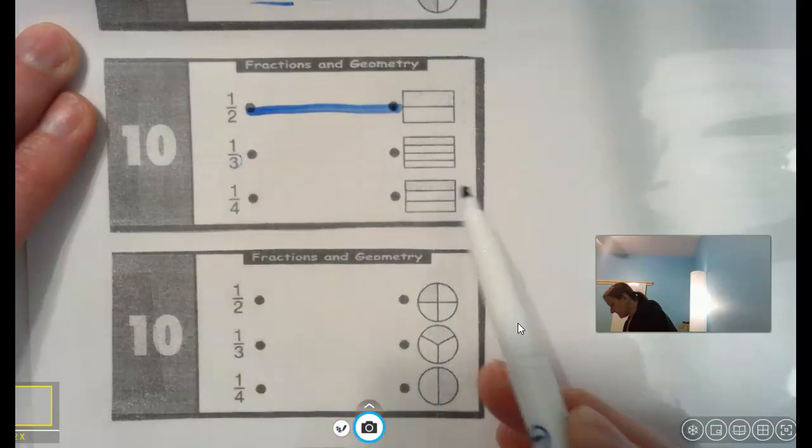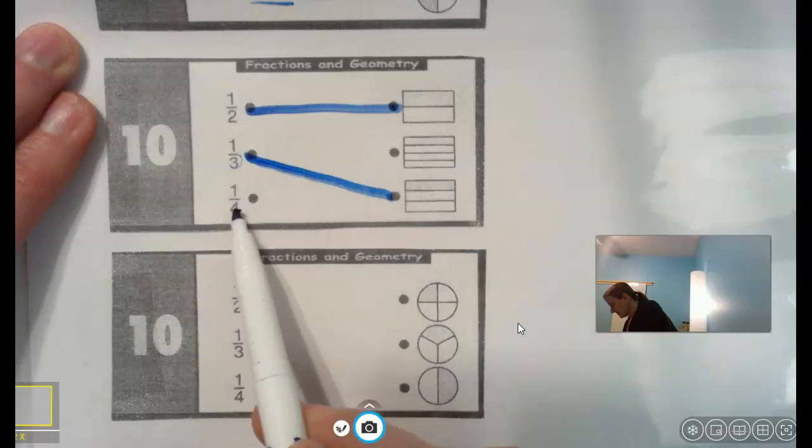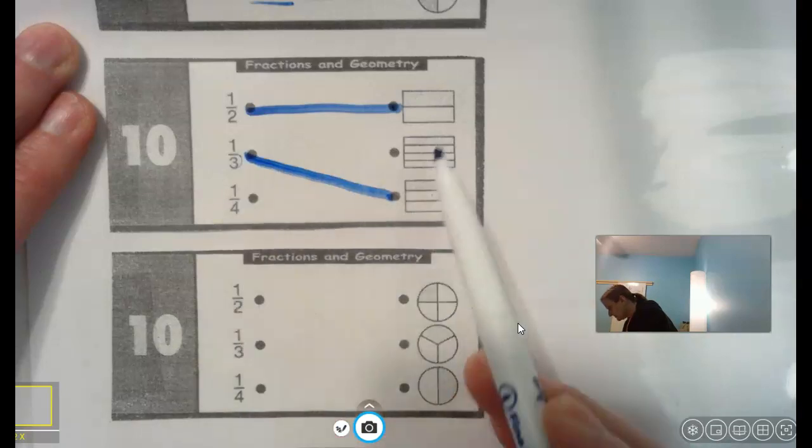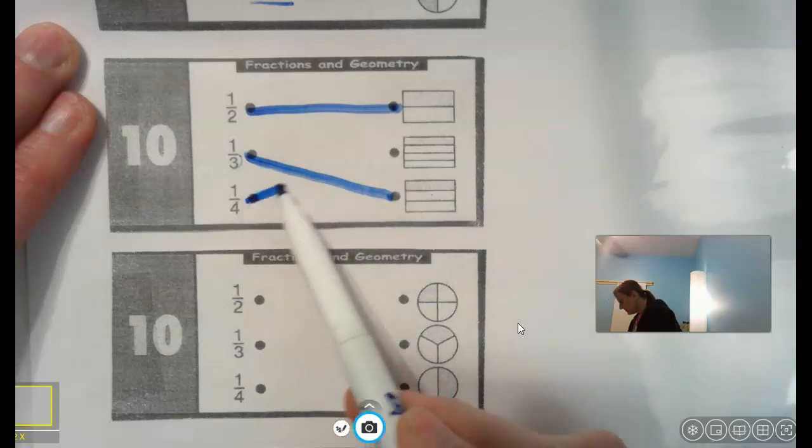The one that is cut into three equal parts. One, two, three. There's that one right there. And one fourth, the one that's cut into four equal parts.